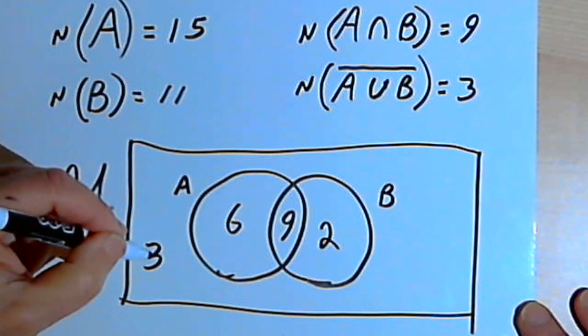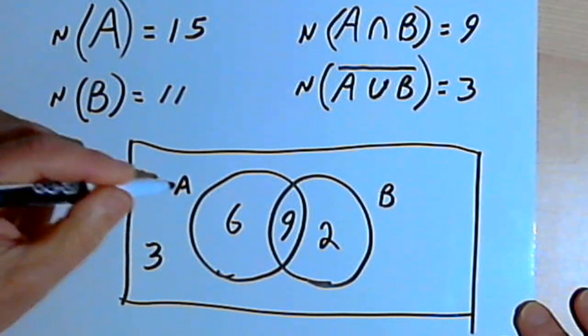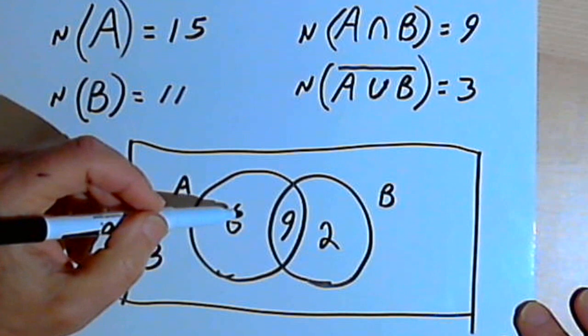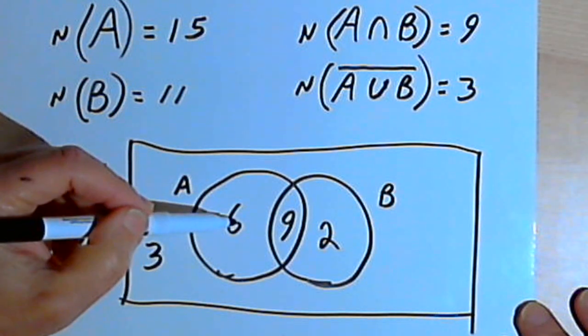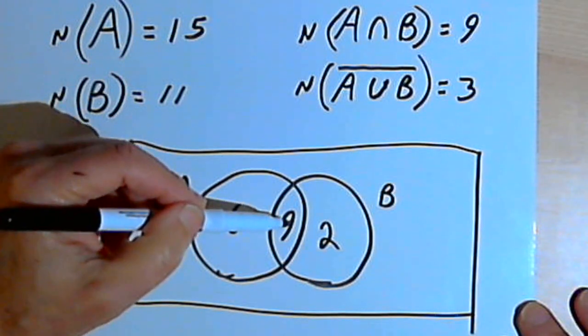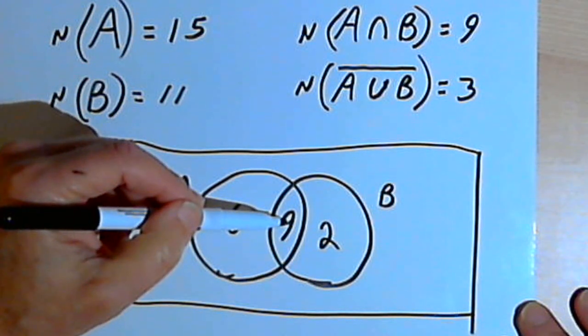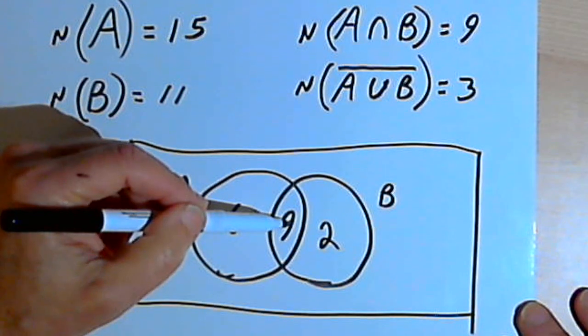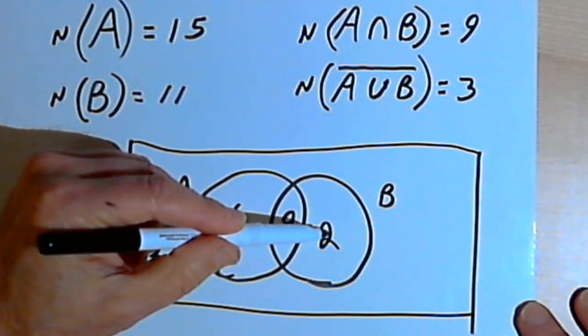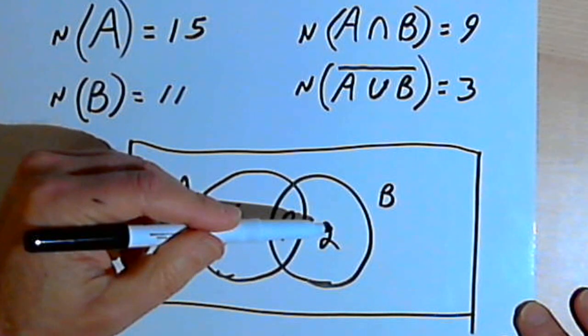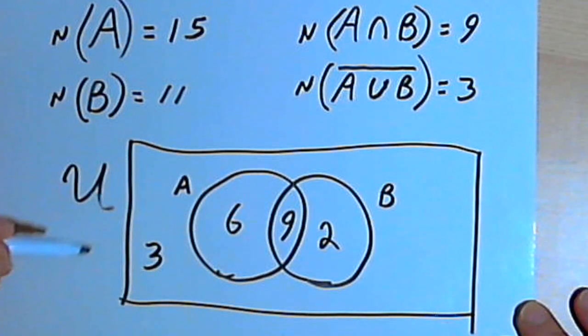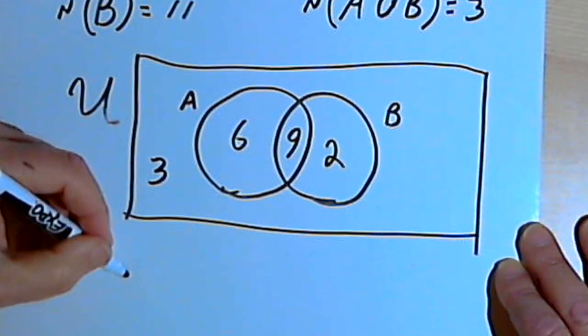So I've got 3 students who are not in either group, plus 6 more who are in only algebra, so that's 9. I've got 9 more who are in the overlapped area, so 9 plus 9 is 18. And then I've got 2 more than that who are taking only biology. So the total size of the universe, the universal set, would be 20.